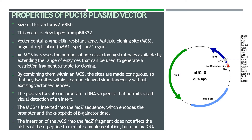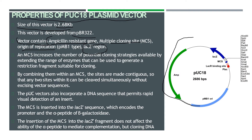These are some of the properties of the pUC18 plasmid vector. As you can see a clear picture of the pUC18 plasmid vector here. The size of this vector is 2.68 kb. This vector is developed from pBR322, which we have already discussed. It contains an ampicillin resistance gene, multiple cloning sites, and an origin of replication with the lacZ region. The multiple cloning site increases the number of potential cloning strategies available by extending the range of enzymes that can be used.